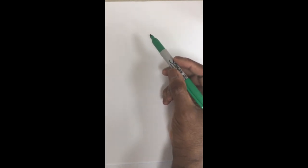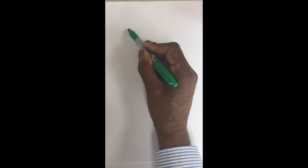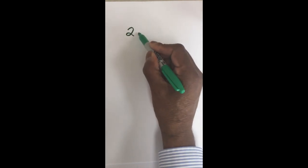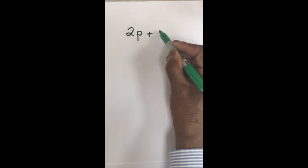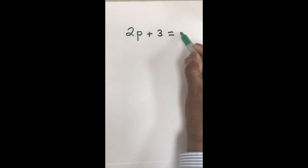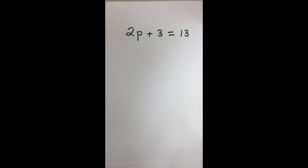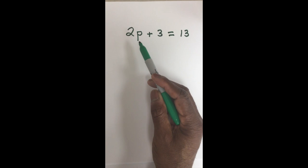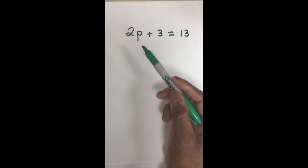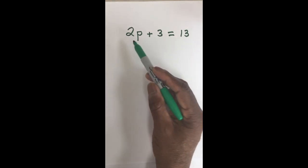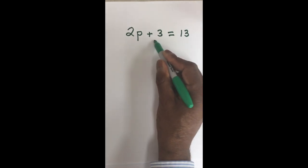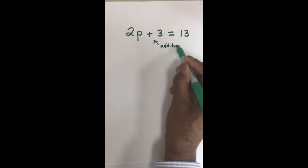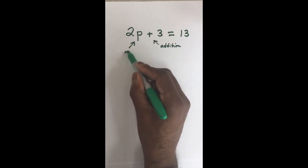Now we've resolved one kind of equation. The next kind is a two-step equation. It's called a two-step equation because there are two operations. Remember, we still want to go through the steps — we want to isolate P. So we need to identify the two operations we have. The first operation is addition, and we also have multiplication.